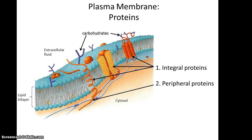If you continue to look at the plasma membrane, you see that there are other structures in and on it. For instance, there are integral proteins — any proteins that are embedded into the plasma membrane or pass completely through it. Another set are the peripheral proteins, which lie on the plasma membrane or are attached directly to an integral protein. You also see that some proteins have carbohydrate chains coming off of them.